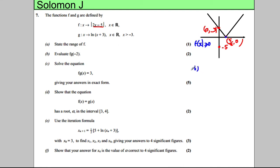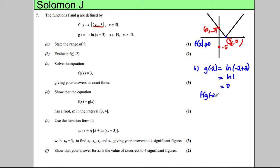Now evaluate F of G of negative 2. Firstly, G(-2) — substituting negative 2 in — is the natural logarithm of (-2 + 3), which is ln(1), which equals 0. So F(G(-2)) is F(0), which is the modulus of (2 × 0 − 5), which is the modulus of negative 5, which is simply 5.